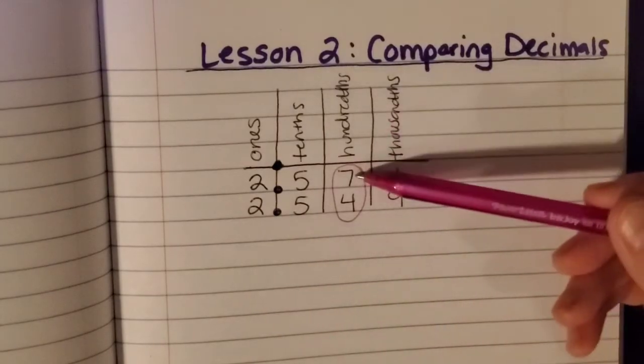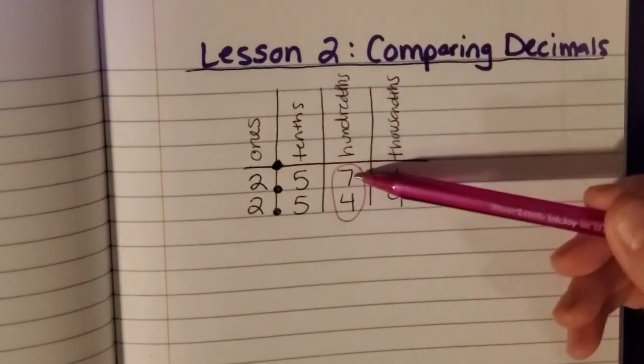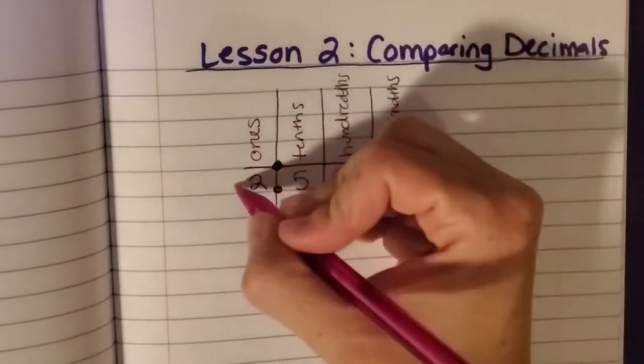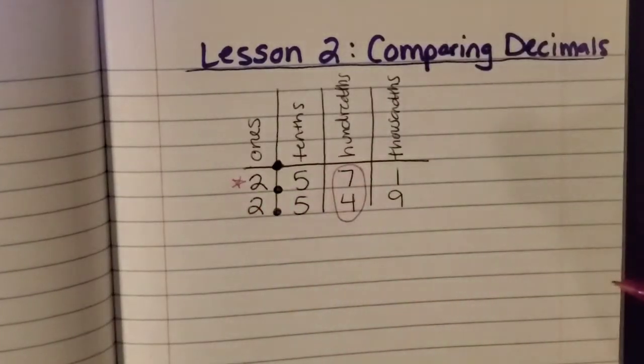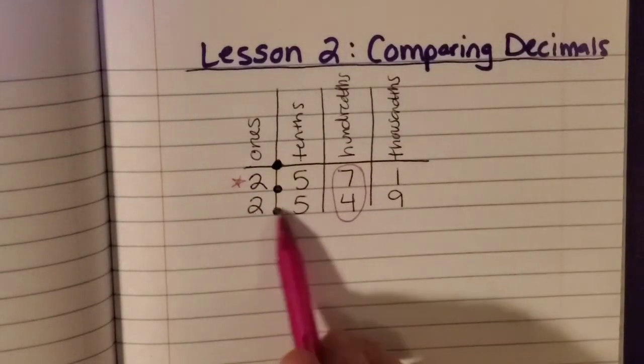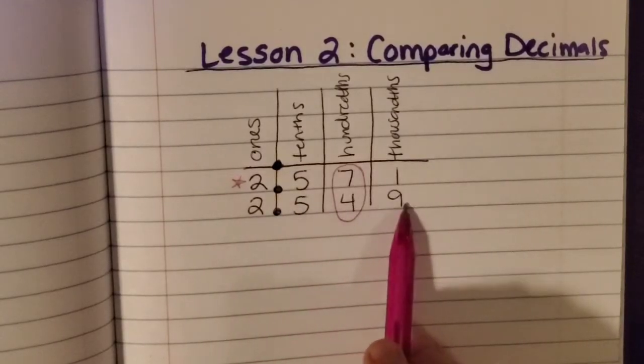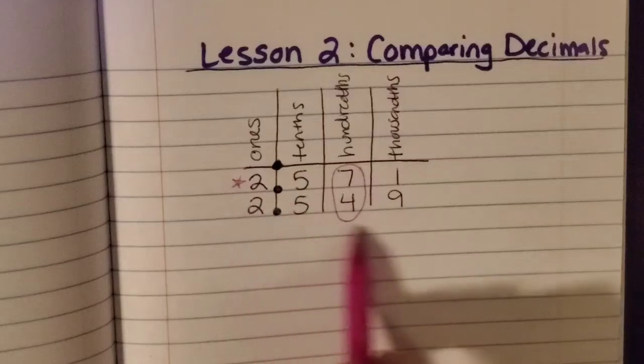So I just need to ask myself which one is bigger, which one is smaller? Okay, so the seven is the greater amount of hundredths. So that makes this number the greater fraction or the greater decimal. And that makes this two and 549 thousandths the smaller decimal.